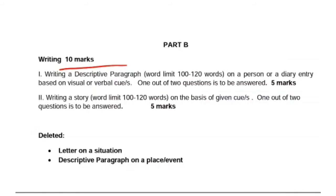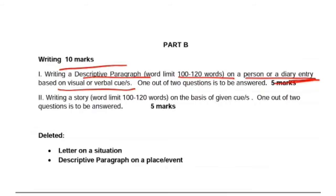Two questions will be asked from writing. The first is a descriptive paragraph with a word limit of 100 to 120 words, based on a person or a diary entry. You may be given a visual or verbal cue — for example, an image of a person like Sachin Tendulkar — and asked to write a descriptive paragraph. Similarly, a diary entry could be asked based on a given incident or situation. Two questions will be given and you have to attempt one, for which you will get five marks.